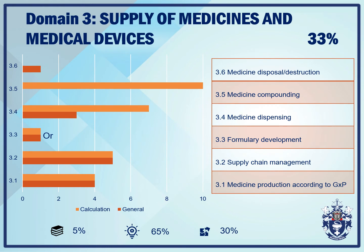33% of the pre-registration examination will be based on Domain 3, the supply of medicines and medical devices. From the graph you can see that the majority of questions in this domain are calculations. You can expect 4 calculation and 4 general questions from Competency 3.1, 5 general and 5 calculation questions from Competency 3.2, 1 calculation or general question in 3.3. Of the 10 questions in 3.4, 7 will be calculations and 3 general. In Competency 3.5 there are 10 calculation questions, and in Competency 3.6 there is 1 general question. 5% of these questions will be knowledge, 65% application, and 30% problem solving.